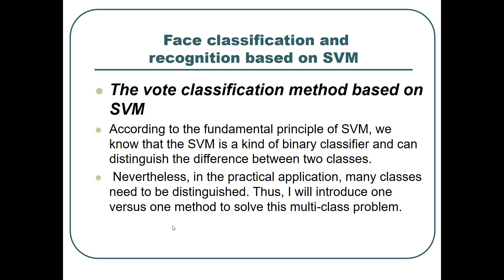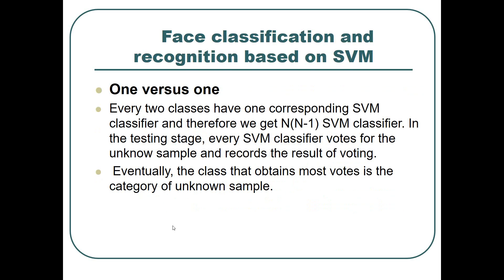According to the fundamental principle of SVM, we know that SVM is a kind of binary classifier and can distinguish the difference between two classes. However, in practical applications, many faces need to be distinguished. So I introduce the one-versus-one method to solve this multi-class problem. Every two classes have one corresponding SVM classifier, and therefore we obtain n*(n-1)/2 SVM classifiers. In the testing stage, every SVM classifier votes for the unknown sample and records the results. Finally, the class that obtains the most votes is the category of the unknown sample.